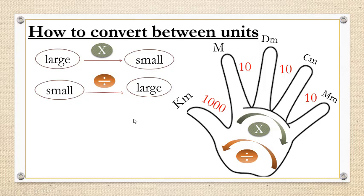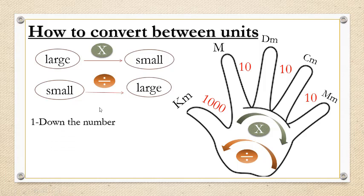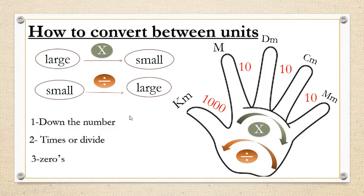To convert between units, we have three steps — don't forget them: step one, write down the number; step two, times or divide; step three, how many zeros.